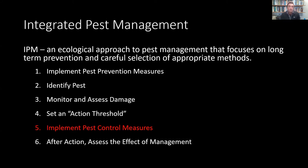Now let's talk about the fifth step in IPM: implementing pest control measures. This is what most people jump to right away, but for IPM professionals, we arrive at control measures as almost the final step in the process. We need good information and good decisions first. But once we know we need to do something, here's what we think about when implementing pest control measures.